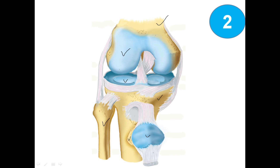Next we talk about the fibrocartilage meniscus. This side is the medial meniscus, and this one is the lateral meniscus.